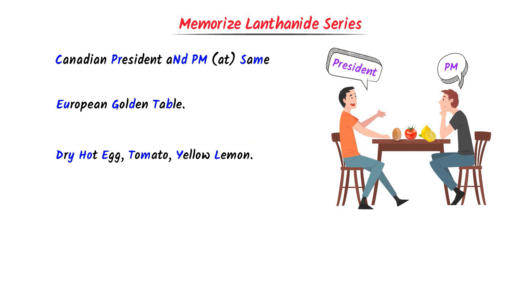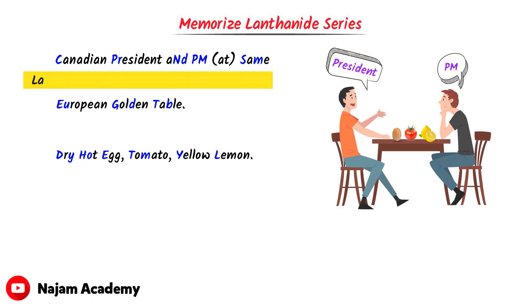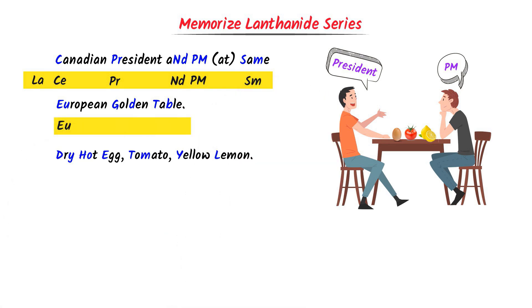The Lanthanide series starts from Lanthanum (La). CN in Canadian stands for Ce, PR in President stands for Pr, ND in AND stands for Nd, PM stands for Pm, SM in SAM stands for Sm, EU stands for Eu, and GD in Golden stands for Gd, TB in Table stands for Tb.